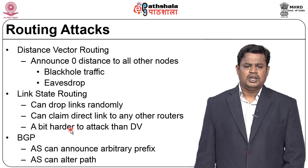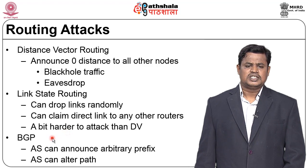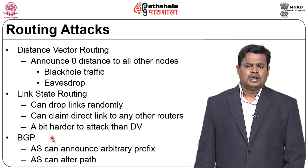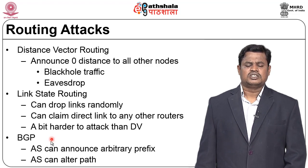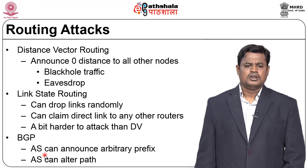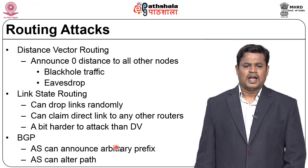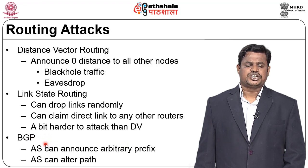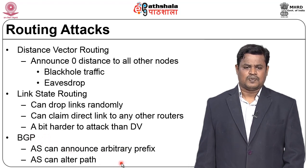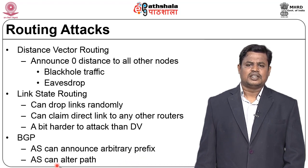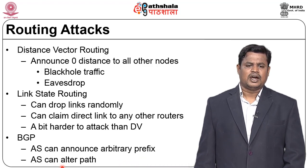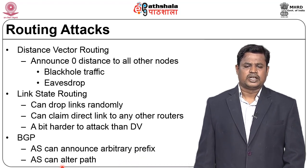BGP (Border Gateway Protocol) uses autonomous systems — each under a single administrative control. An AS can announce arbitrary prefix values to create false routing information, and attackers can advertise alternative paths instead of the correct ones, exploiting BGP in routing attacks.